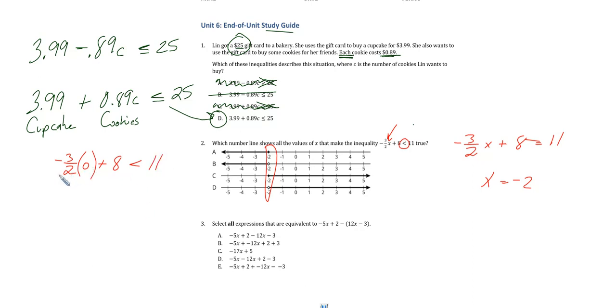So we plug in zero. Zero times anything just kind of makes it go away. And this makes a true statement. Eight is smaller than 11. So I want to shade towards zero.